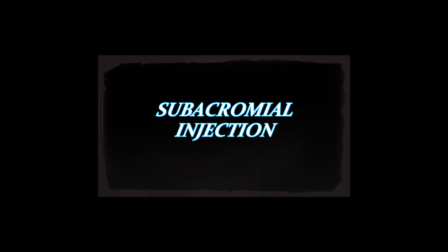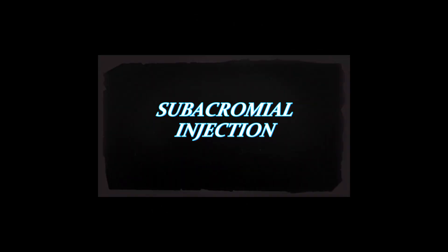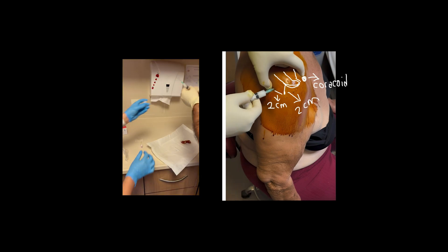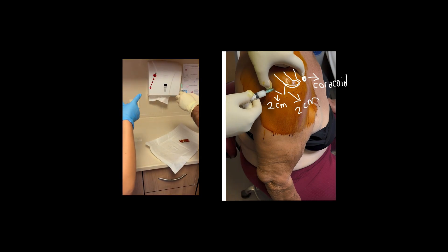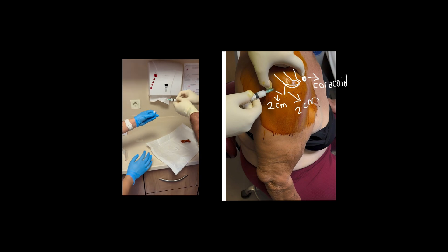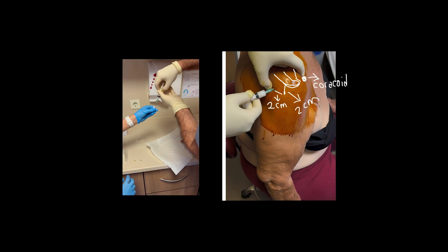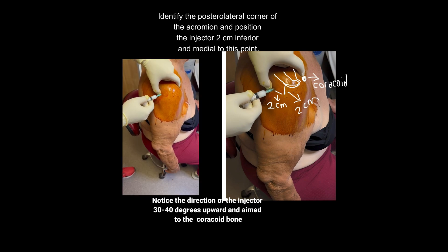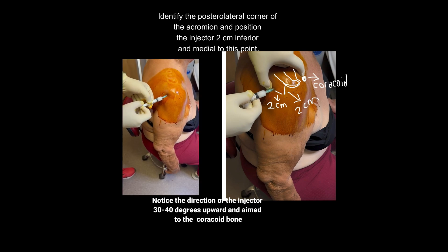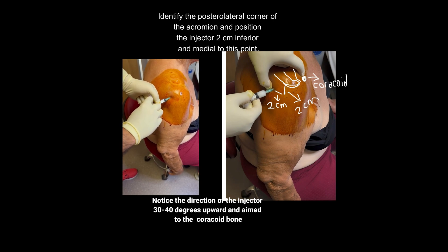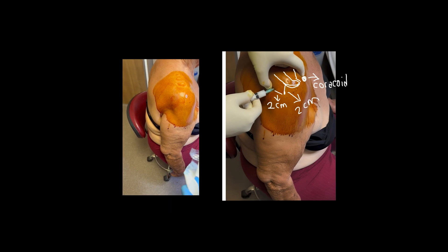Subacromial Injection. Identify the posterolateral corner of the acromion and position the injector 2 centimeters inferior and medial to this point. Notice the direction of the injector: 30-40 degrees upward, and aim to the coracoid bone.